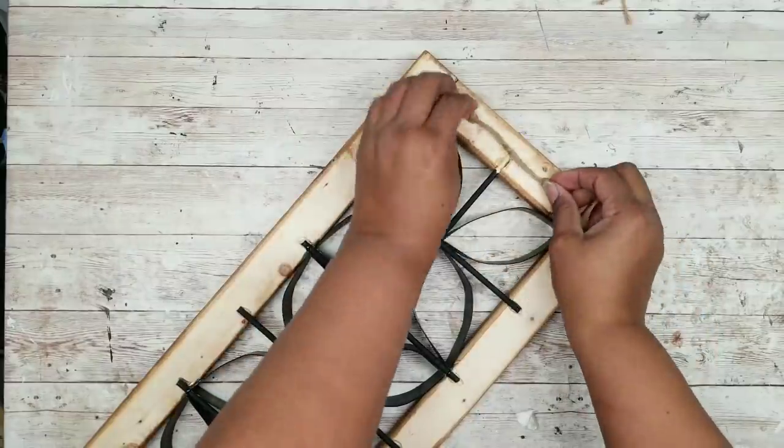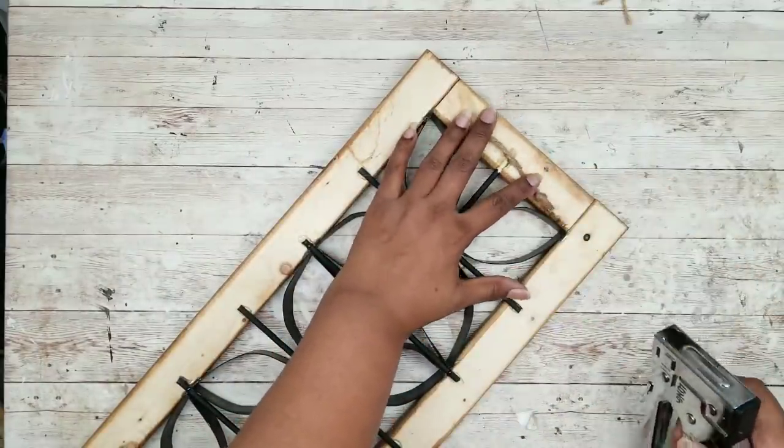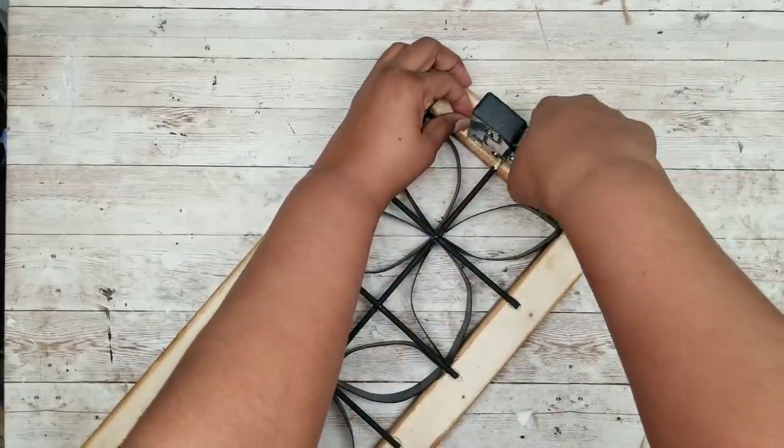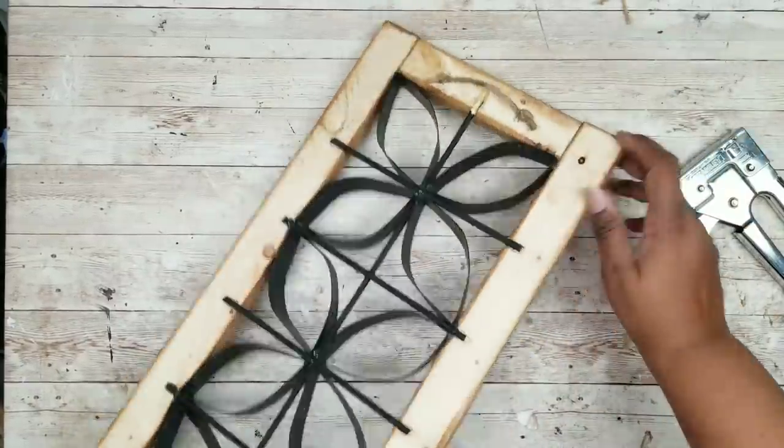To hang our piece I'm just taking a piece of jute twine and I tied knots on each end and I'm just going to secure these in place on each end with a couple of staples with my staple gun. And now this is ready to hang.